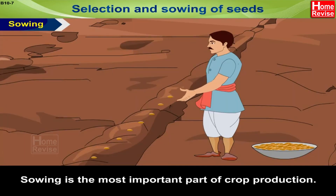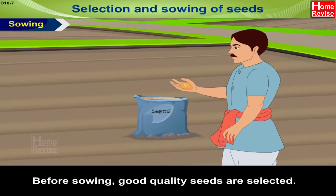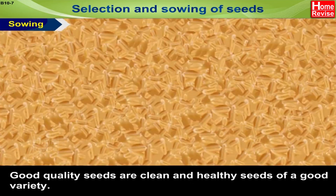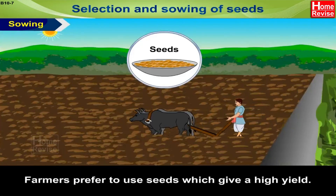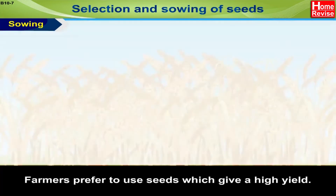Selection and sowing of seeds. Sowing is the most important part of crop production. Before sowing, good quality seeds are selected. Good quality seeds are clean and healthy seeds of a good variety. Farmers prefer to use seeds which give a high yield.